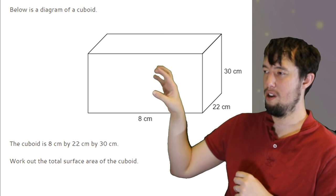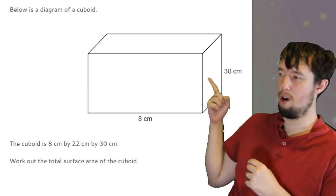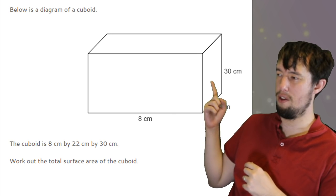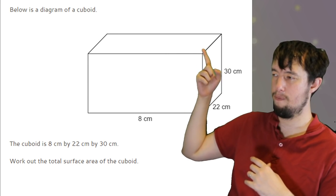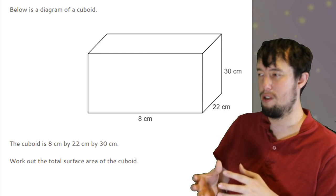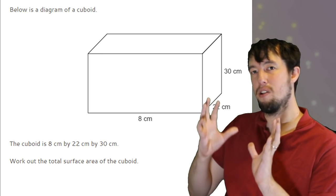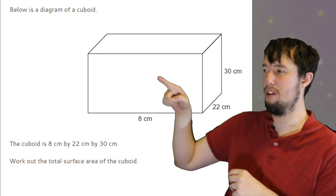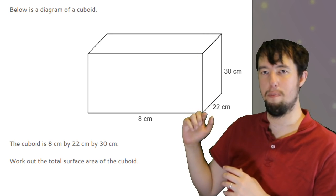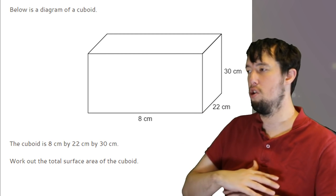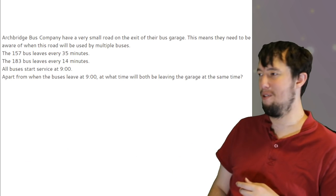To find the surface area, you work out the individual area of the rectangles. This rectangle here is 8 by 30 high, so you do 8 times 30. Work out the area of this one, which is 22 by 30. Work out the area of the top one, which is 8 by 22. Each face has a complete identical face on the other side, so you add up the three areas and just double it. Don't forget it's surface area, area is centimeters squared.